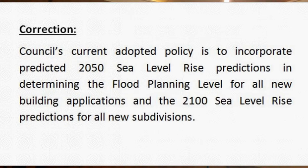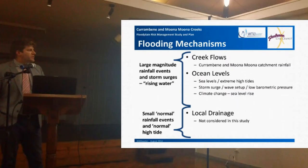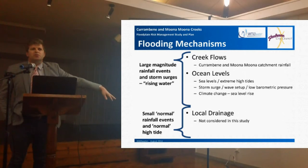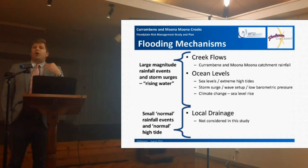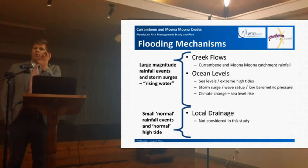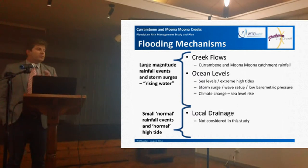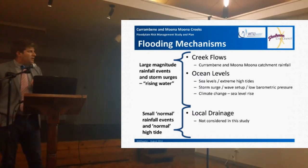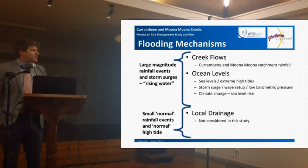Climate change is included as a sensitivity run, not necessarily at the planning level. The reason we do that is just to see if flood risk dramatically worsens with the predicted sea level rise, so we look at those scenarios. What we're not looking at is local drainage — pipes make very little difference to the work we're doing because the flow capacity is very minor, although we will have culverts at road crossings. Those are the flood mechanisms we're looking at in this study.